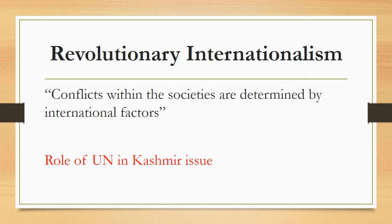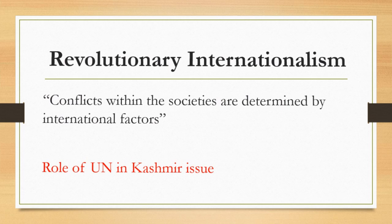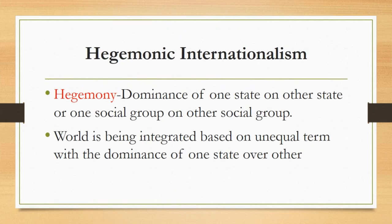The third type is hegemonic internationalism. Hegemony is basically the dominance of one state over another state, or one social group over another. In the current situation, the world is being integrated based on unequal terms, with the dominance of one state over others. This is hegemonic internationalism, as states race to establish their hegemonies in the international paradigm.